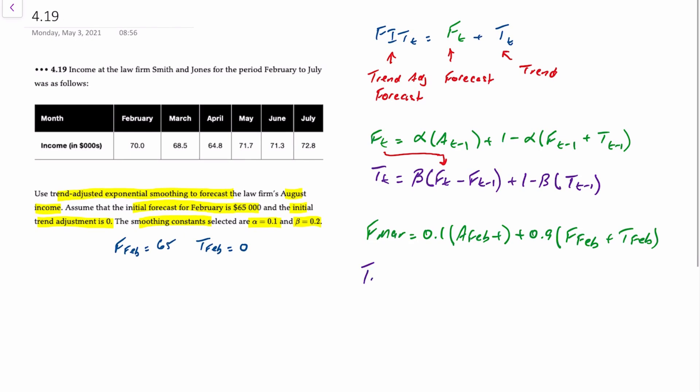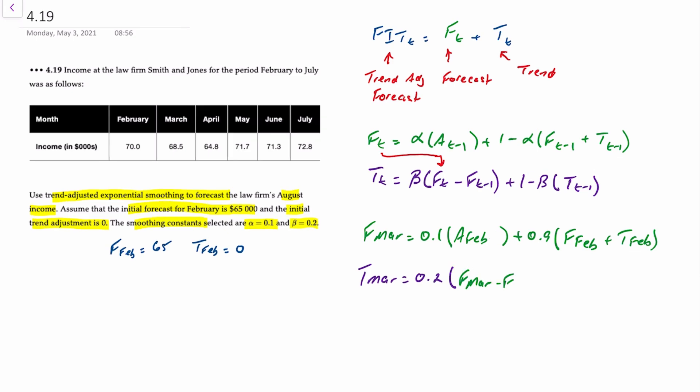And then if we want the trend for March, that's equal to beta of 0.2, multiplied by the forecast for March minus the forecast for February, plus 1 minus beta, or 0.8, times the trend for February.